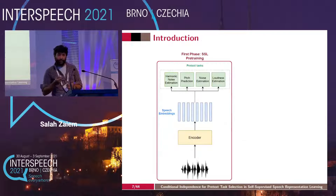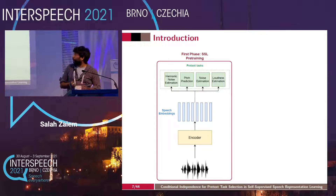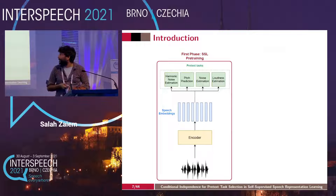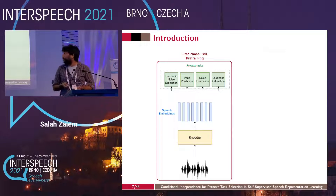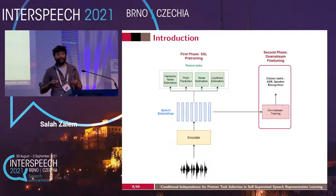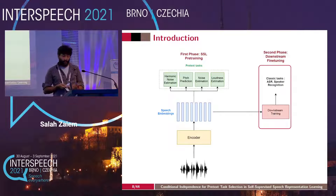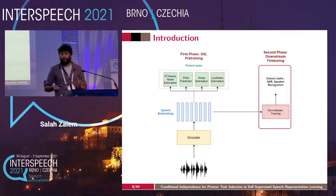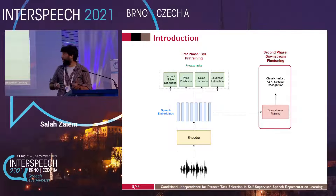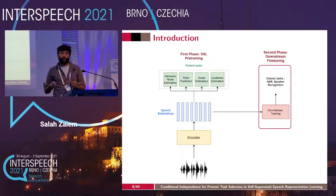In self-supervised learning, we learn speech embeddings through learning to solve pretext tasks — the green boxes in the diagram. Those speech embeddings are then, in the second phase, fed to a downstream training model to be fine-tuned for a final downstream task like ASR or speaker recognition. The main problem is that the workers have been purely selected empirically, and every testing involves two training phases — a first one held on huge unlabeled data, leading to very heavy computations.